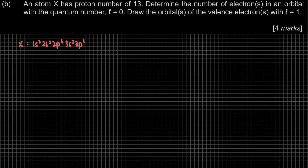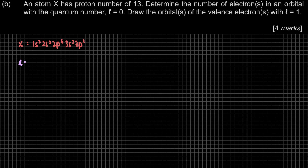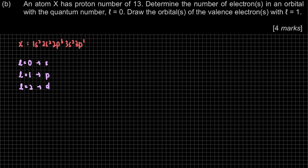So we have 13 electrons total. Back to the question — there are two parts. First: determine the number of electrons with quantum number L equal to 0. When L=0, the electron is in an S orbital. When L=1, it's in a P orbital. When L=2, it's in a D orbital. Since L=0 means S orbitals, we have 1s², 2s², and 3s² — so the total number of electrons when L equal to 0 is 6.